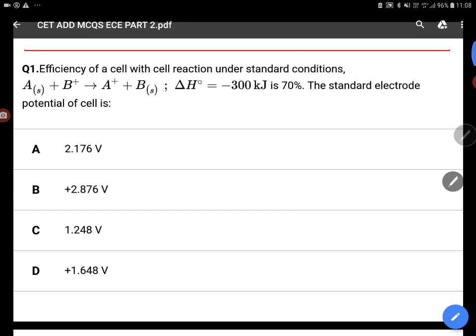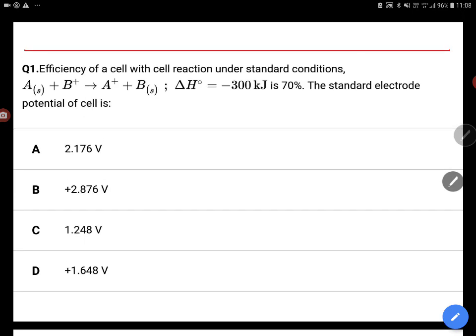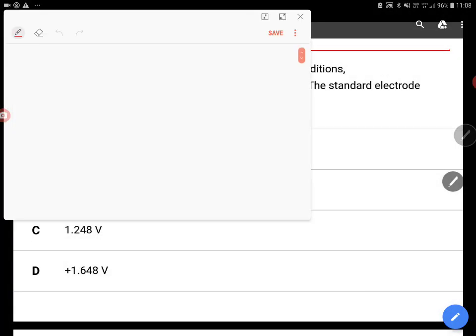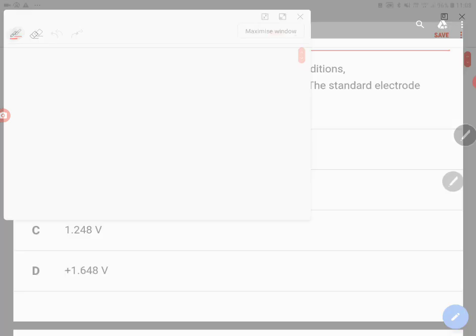Efficiency of an electrochemical cell, η, equals ΔG°/ΔH°. This equals -nFE°cell divided by ΔH°.